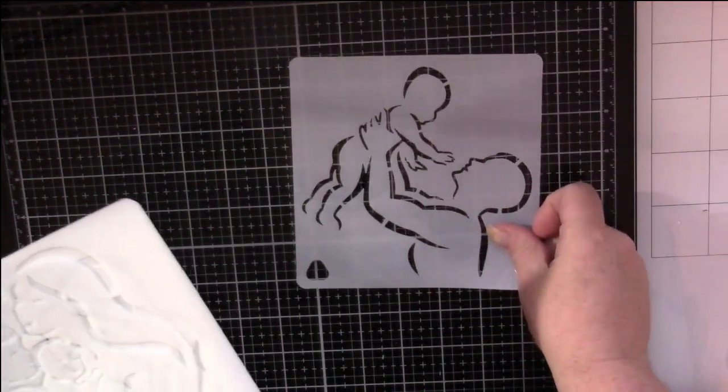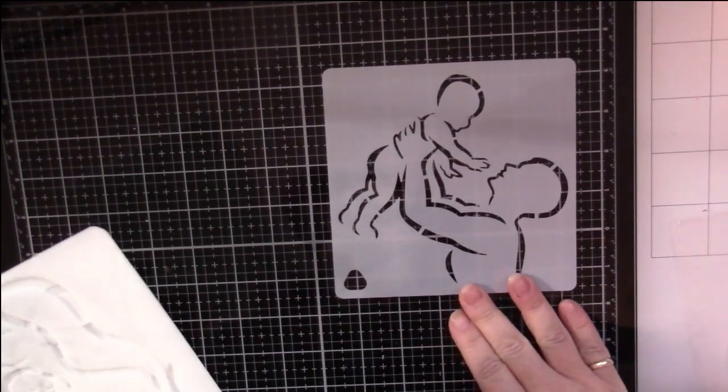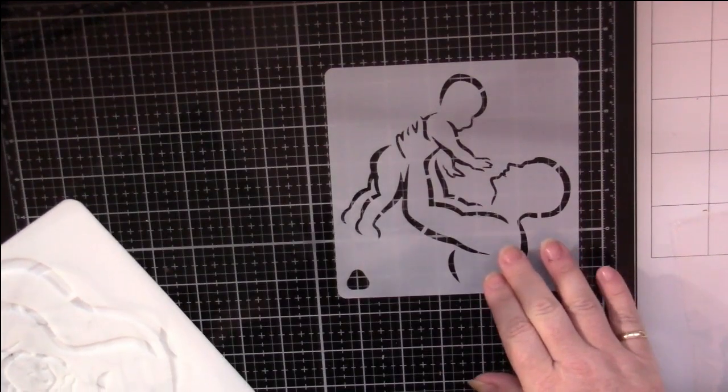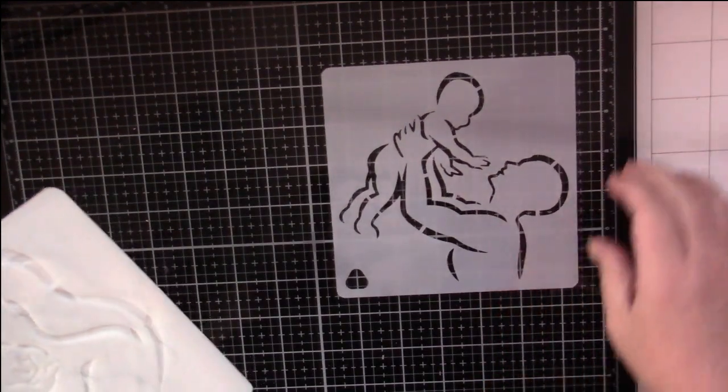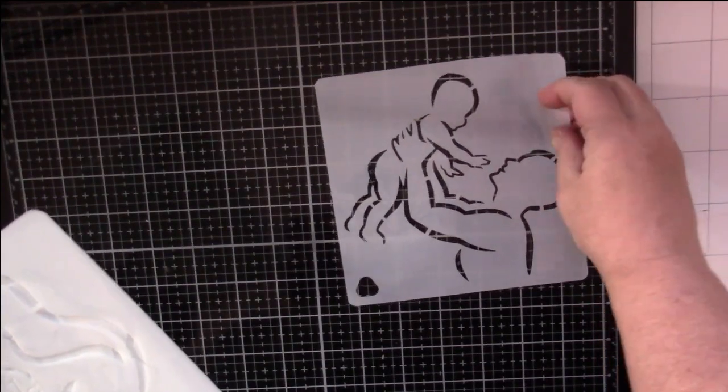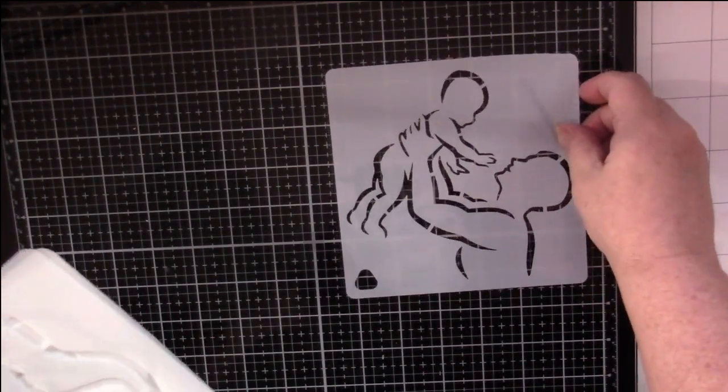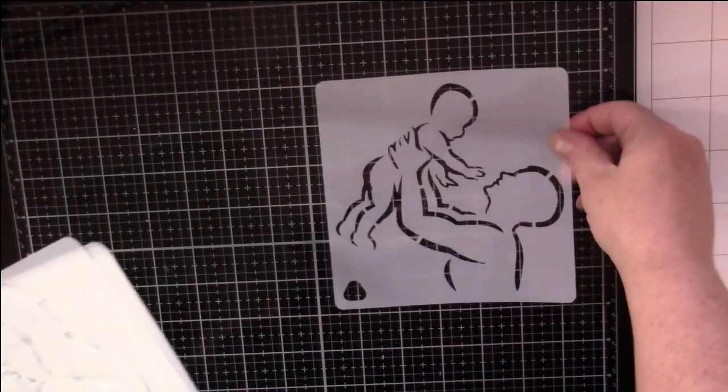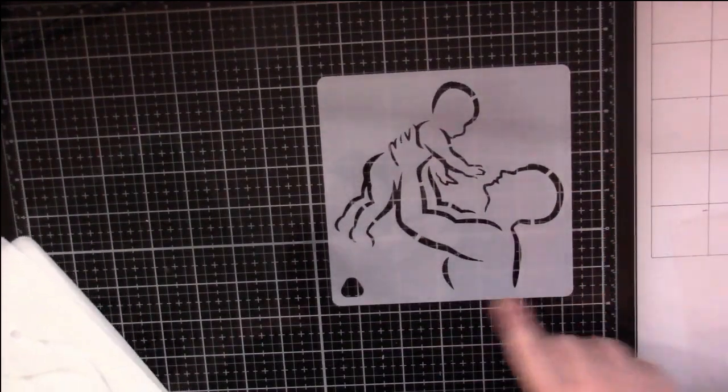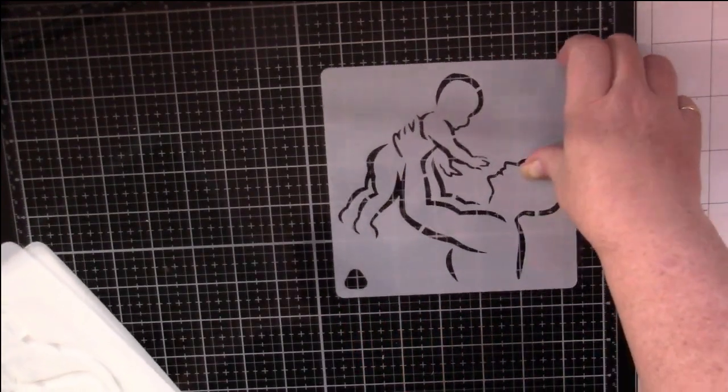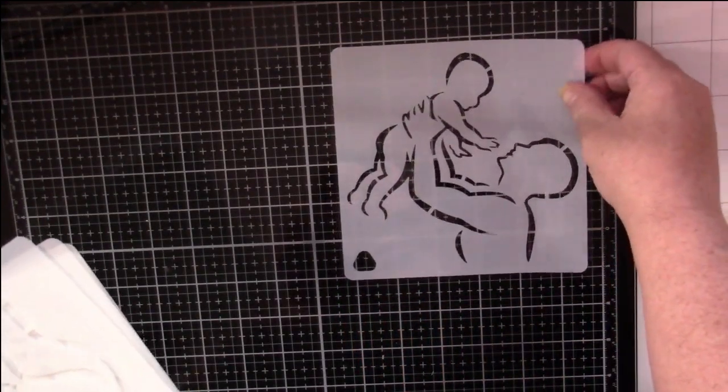They're all pictures of fathers and mothers with children and families and pregnant ladies and all that sort of thing. They're just absolutely gorgeous life-affirming stencils. And they all have this little hole in the corner so you can put them on a ring if that's how you like to store your stencils. So there's dad and baby.